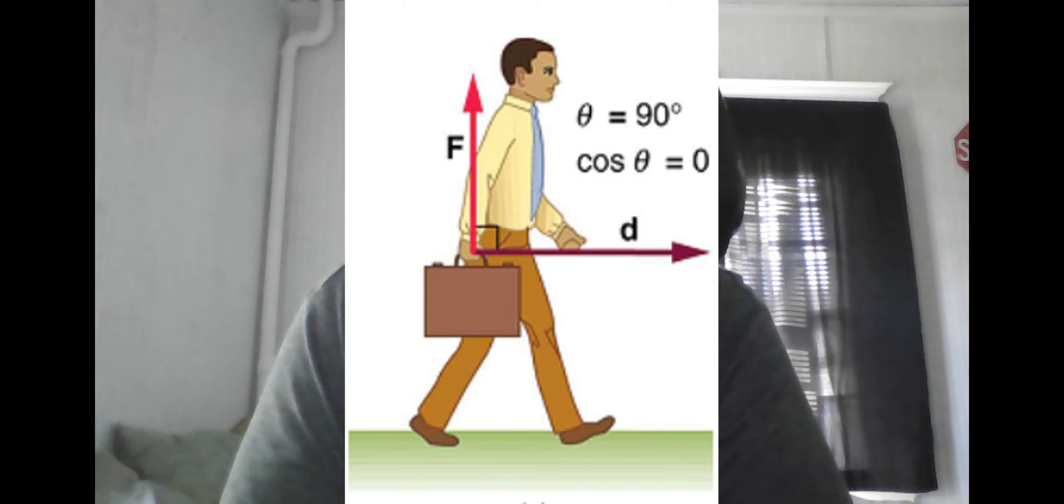Just like the international measurement of distance is meters and the international measurement of time is seconds, the international measurement of work done, or energy in total, is in something called joules, written as capital J. And this is true for any type of energy, and not simply mechanical ones.